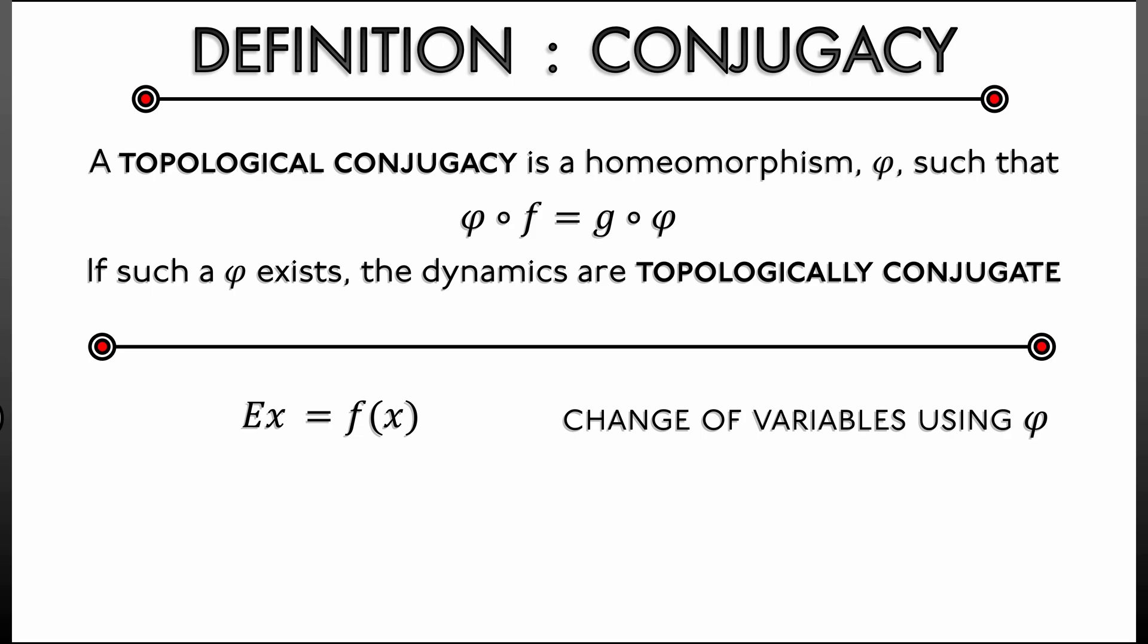so that means if we hit both sides of this equation with φ, we should get something that is the same. This φ preserves the topology. So what we have is φ(Ė(x)) = φ(f(x)).